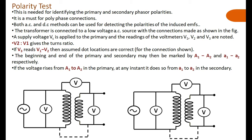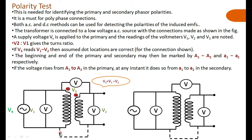The transformer is connected to a low voltage AC source with the connection made as shown in the figure. The LV side is connected to the supply voltage Vs. You apply a small voltage, and as you can see in the connection diagram, between the primary and secondary you connect one voltmeter across the terminals. One of the terminals of the primary and secondary are short-circuited.